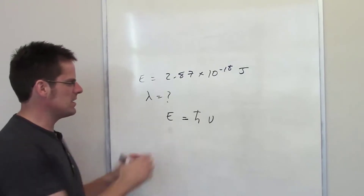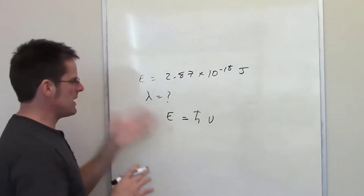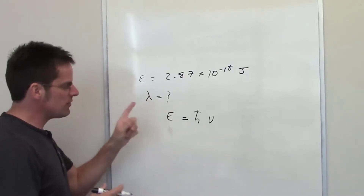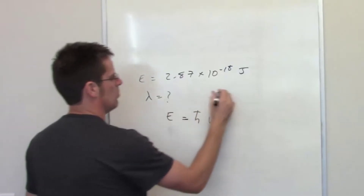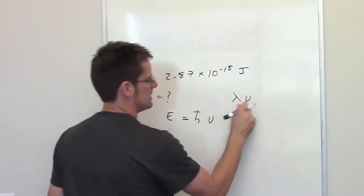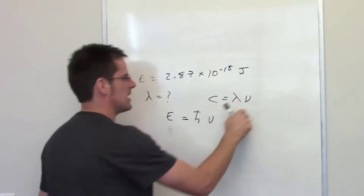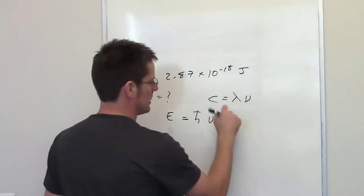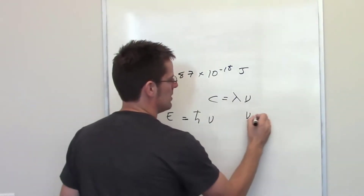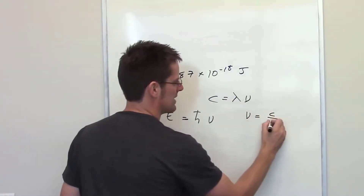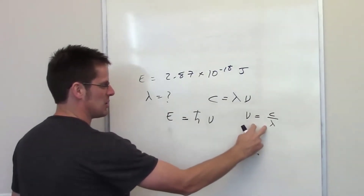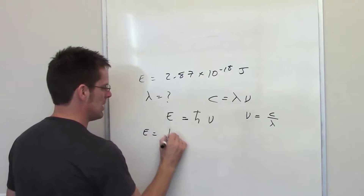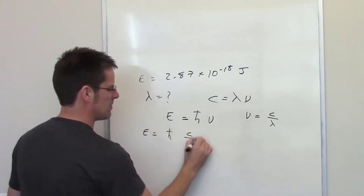You look at that and you don't see wavelength in there, so you might initially think, well, how do I do this problem? You have to remember that there is a way of interrelating wavelength and frequency: wavelength times frequency equals the speed of light. You can rearrange this algebraically to show that frequency equals the speed of light divided by wavelength, and then substitute that in for frequency. So energy is going to be equal to Planck's constant multiplied by the speed of light divided by wavelength.